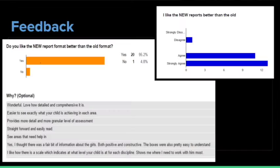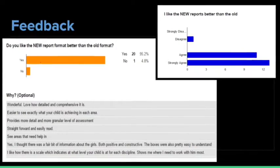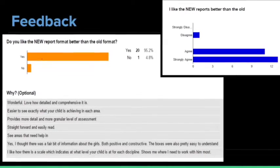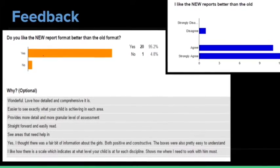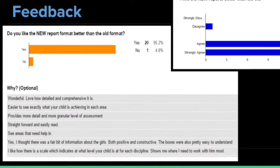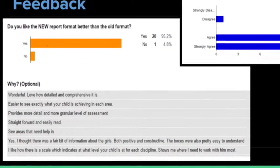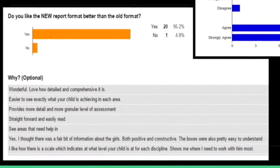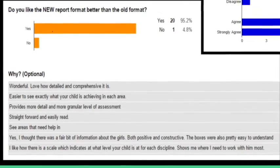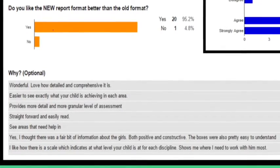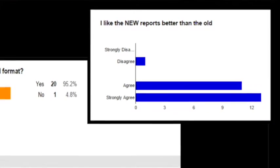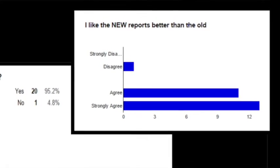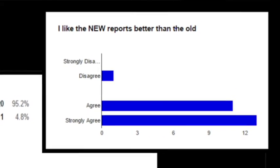Some of the parent comments included: 'Wonderful — how detailed and comprehensive it is.' 'Easier to see exactly what your child is achieving in each area.' 'Provides more detail and a more granular level of assessment.' 'Straightforward and easier to read.' 'Shows areas where children need help.' 'A fair bit of information — both positive and constructive.' 'Easy to understand.' 'Shows me what I need to work on.' Of our staff, pretty much all of them responded, with strongly agree and agree that they liked the new reports better than the old. One disagreed, but you'll always get someone who doesn't like change.